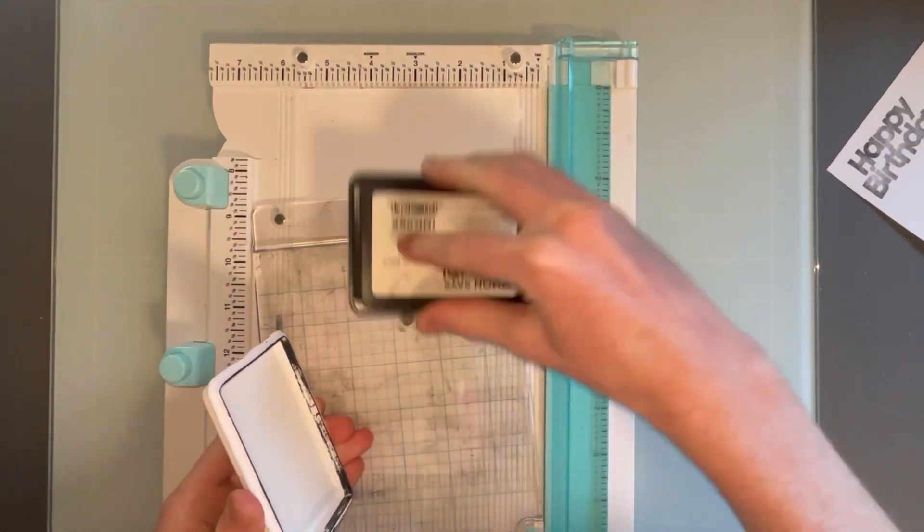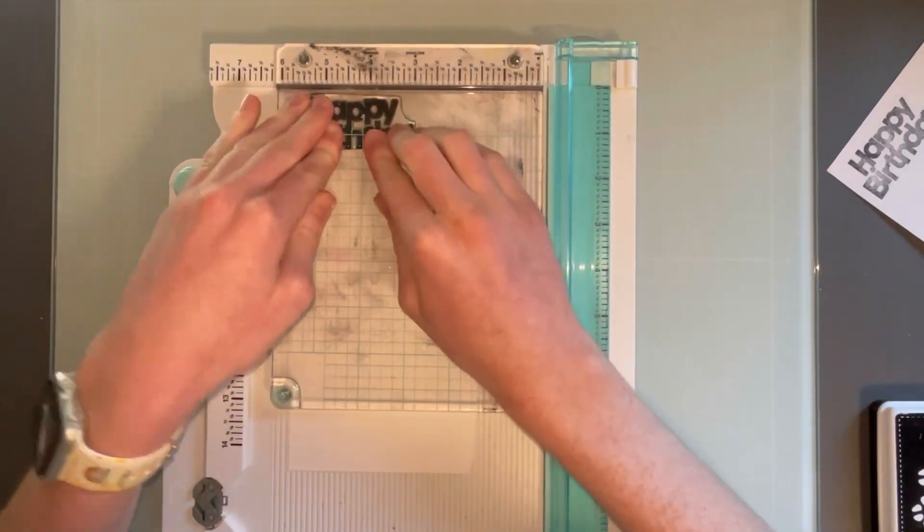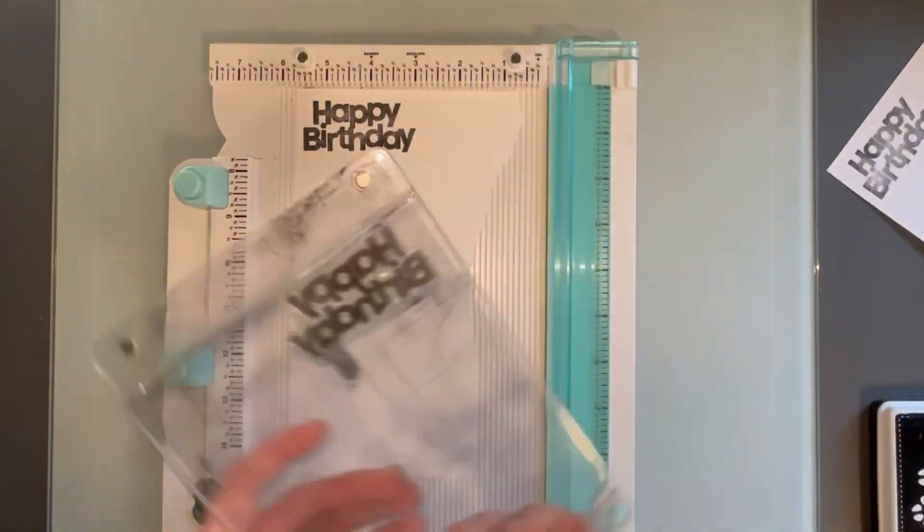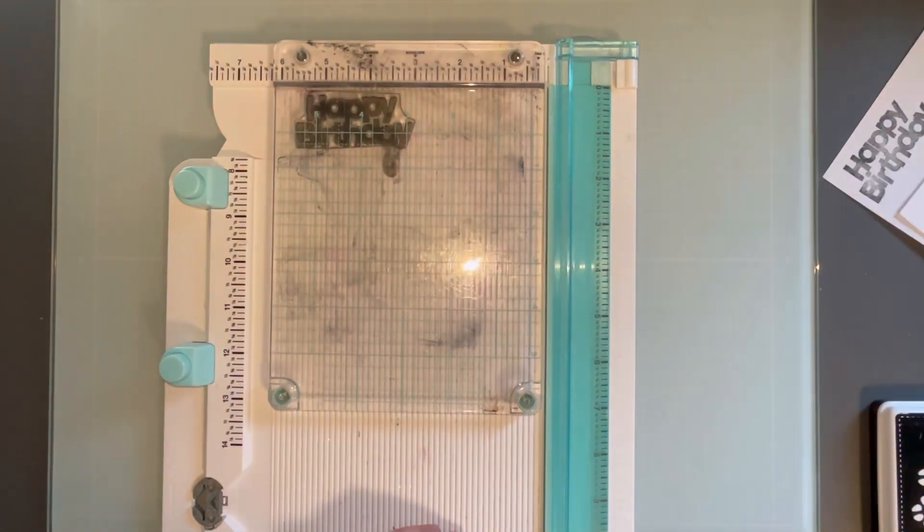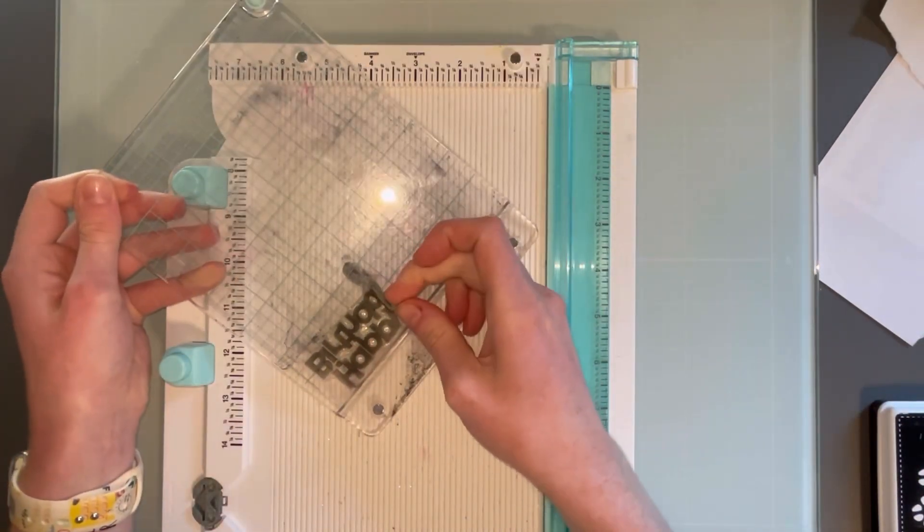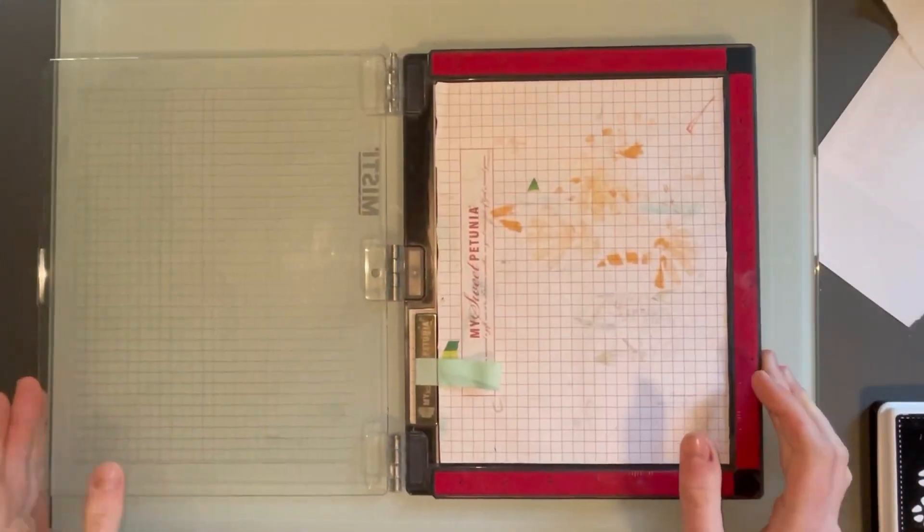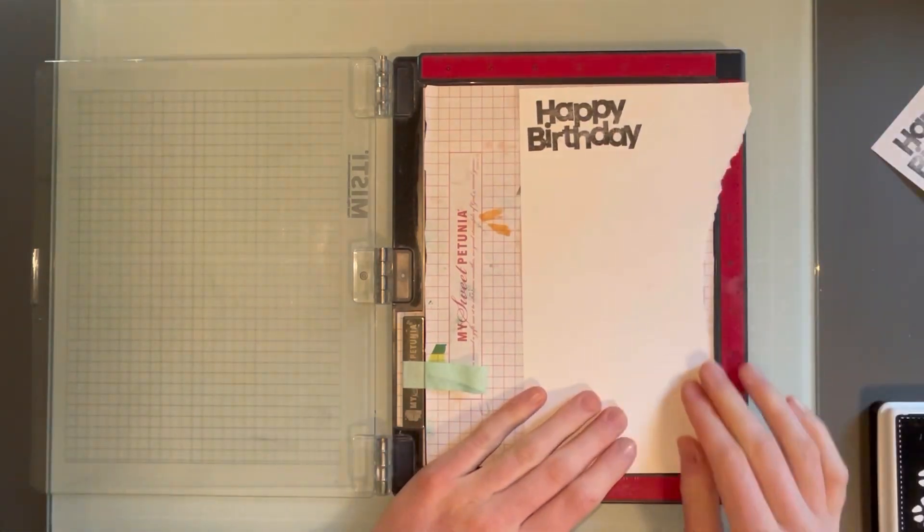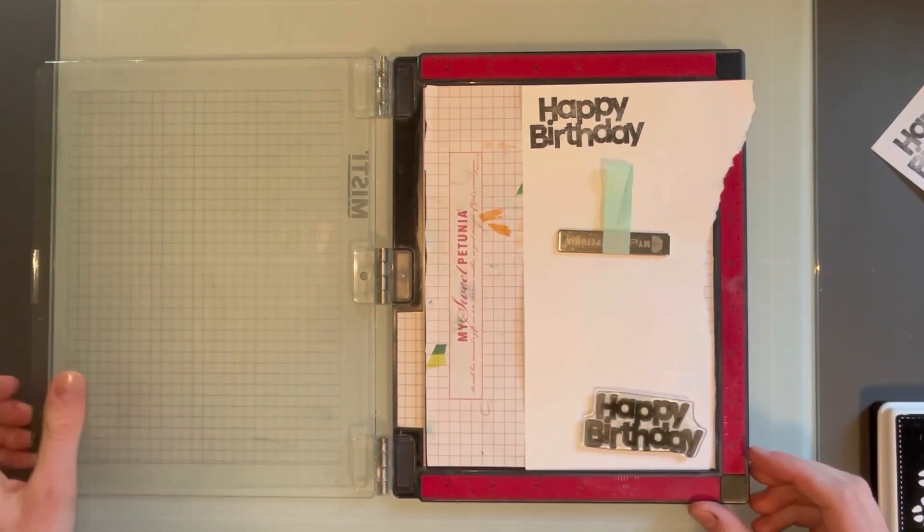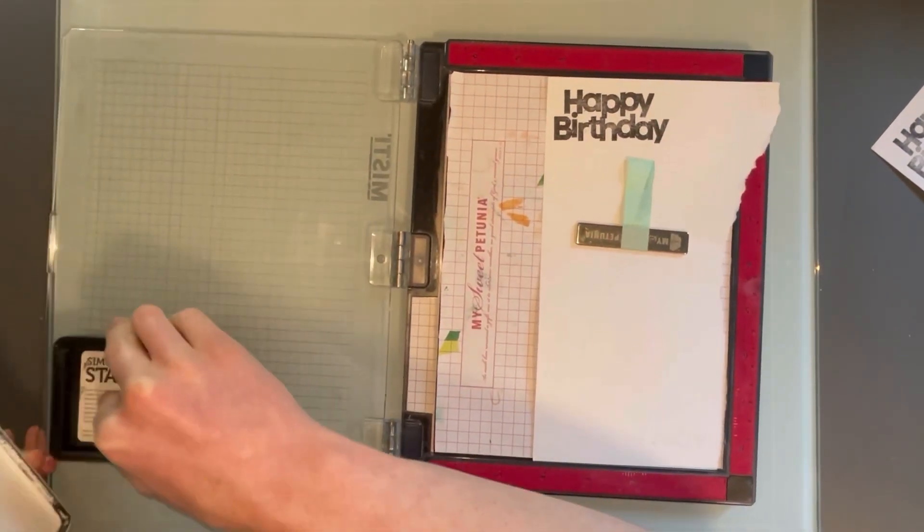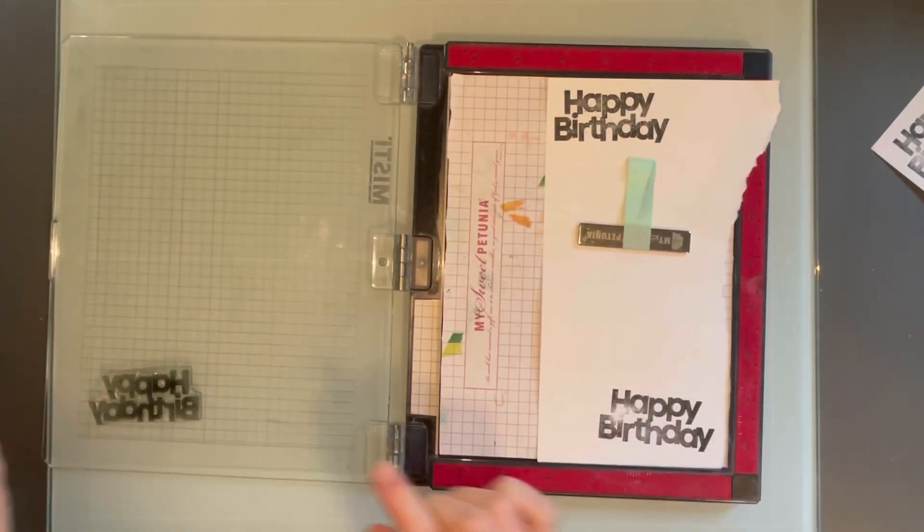Next, the next item is the We Are Memory Keepers all in one tool. This is definitely a little bit more expensive, but I really recommend it for beginner crafters because it has everything you need. You can trim paper, you can score paper, you can stamp, you can create envelopes on it. It really has a lot of different options. You just place the stamp on the stamping platform and press down to ink up or to stamp the image. This is a really great option for beginners. It is a little bit more pricey, but it's definitely worth it because of how many different tools you get.